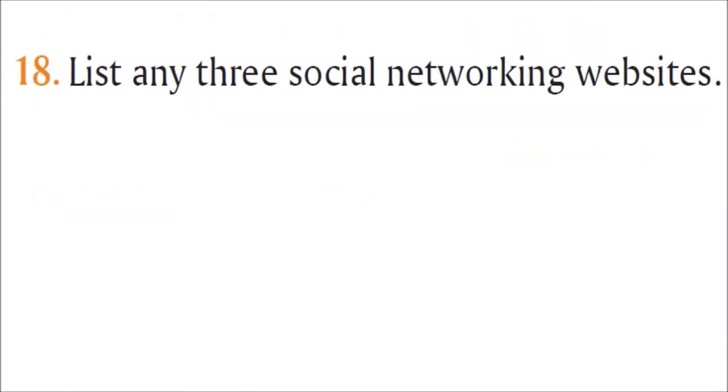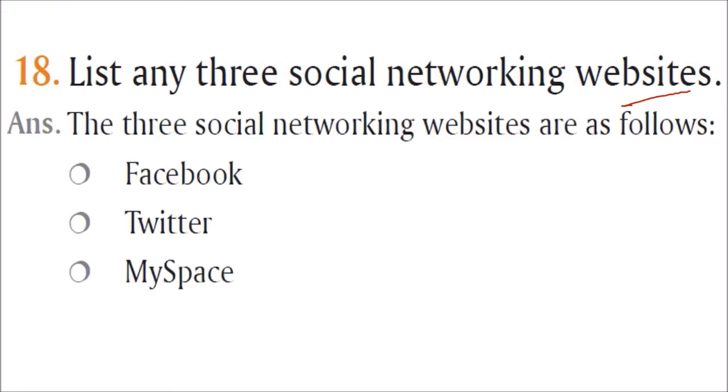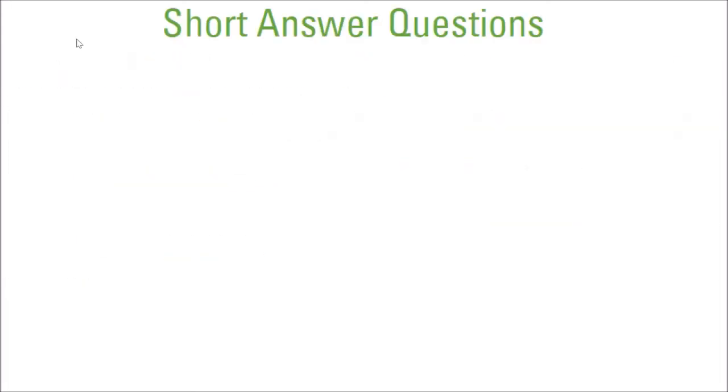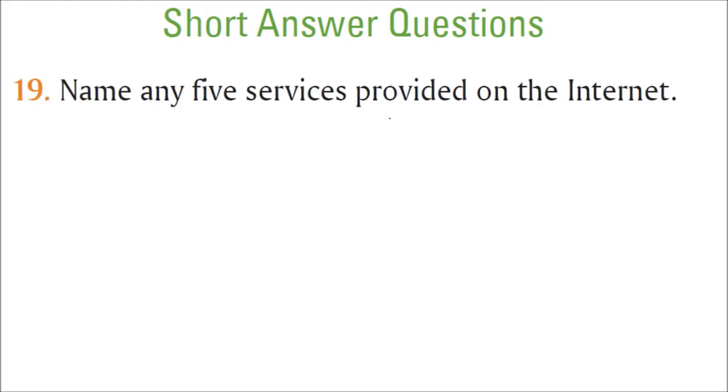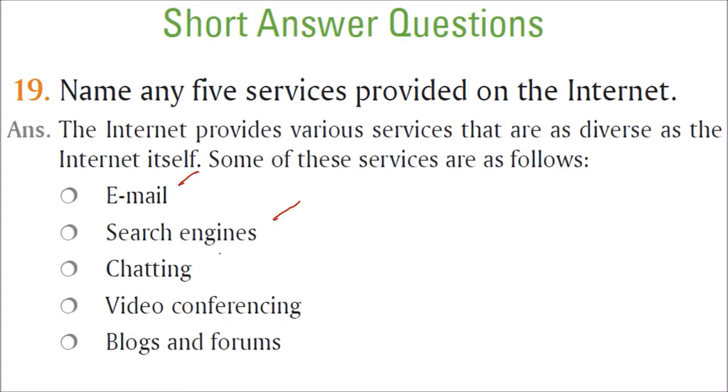List any three social networking websites. Social networking means you are connecting to your friends, your relatives. Facebook, Twitter, MySpace. Today we have others also. Now short answer questions - generally we complete it in two sentences, two or more sentences. Name any five services provided on the internet. Internet is providing various services: email, search engines, chatting, video conferencing, blogs and forums. Most of the work is done now on internet - your payment, online payment.